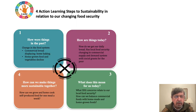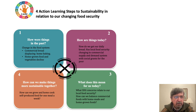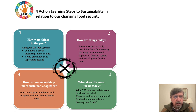Drawing on the four quadrants, what we're able to see is how things were in the past, how are things today, what does this mean to us today, and how can we make things more sustainable together? Using the open framework, one can start on any of these quadrants and move on.